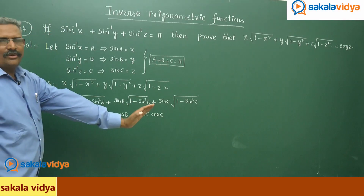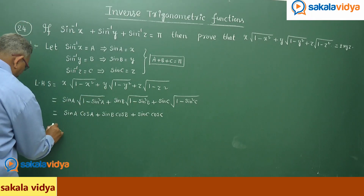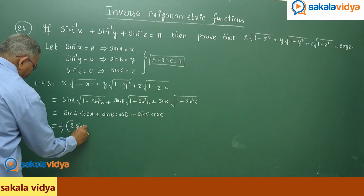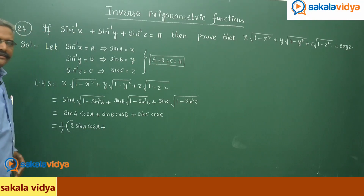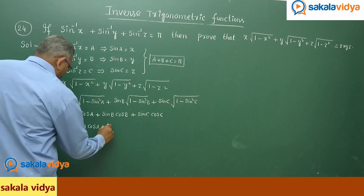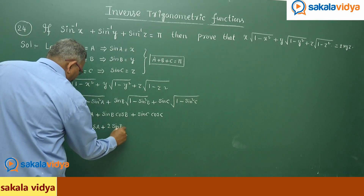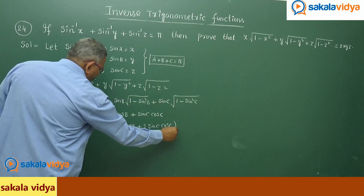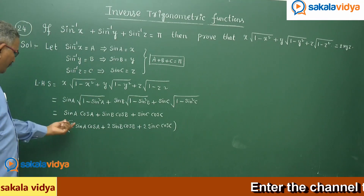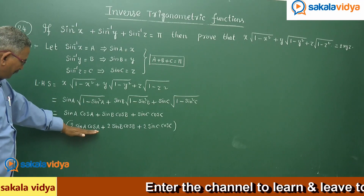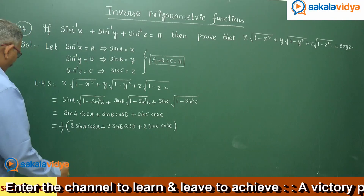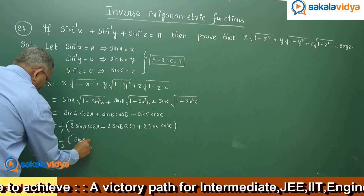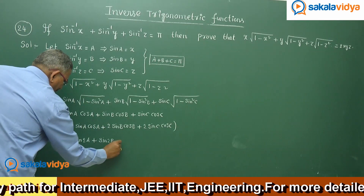Multiplying throughout by 2 and dividing by 2 (without changing identity), this becomes ½(2 sin A cos A + 2 sin B cos B + 2 sin C cos C). Using the double angle formula 2 sin θ cos θ = sin 2θ from multiple angles, this equals ½(sin 2A + sin 2B + sin 2C).